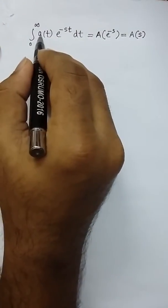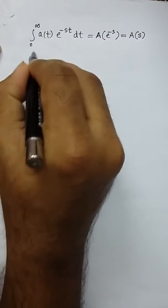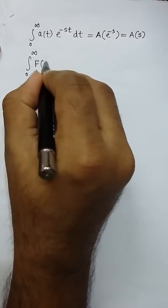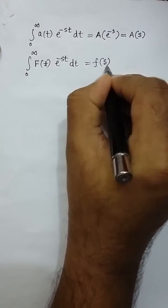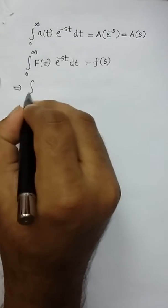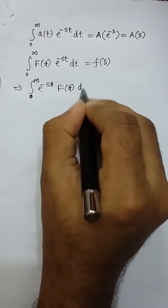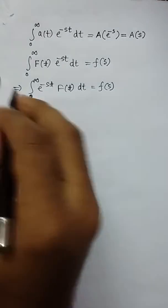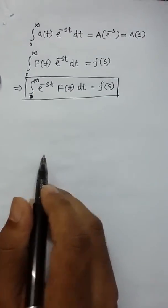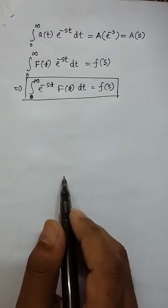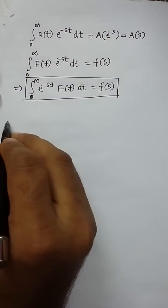The result equals e to the power minus s instead of x, which is also a function of s, so we write it as a function of s. Now replacing small a by f and capital A by capital F, we get: the integral from 0 to infinity of f(t) times e to the power minus s*t dt equals F(s). This is the basic formula of Laplace transform — and this is how we derive it.